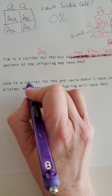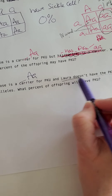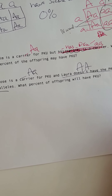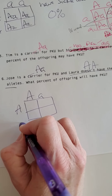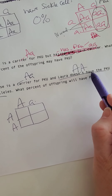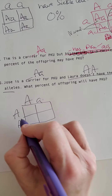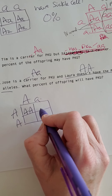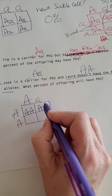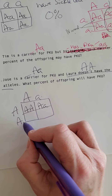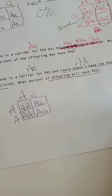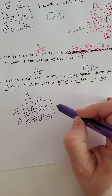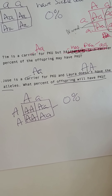Jose is a carrier for PKU, so he is Aa. Laura doesn't have the PKU alleles, so she is AA. Setting up the Punnett square with Jose on one side and Laura on the other, all boxes come out as either AA or Aa. PKU is a recessive disease, so both parents must give the recessive allele — meaning 0% of offspring will have PKU.